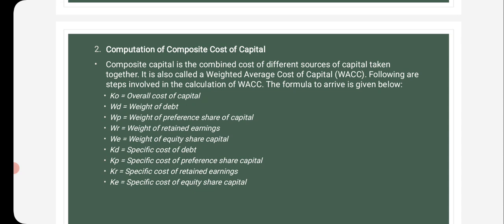Next, computation of composite cost — weighted average cost of capital. It refers to the weighted average cost of different sources of finance and is very important in financial decision making. The steps involved in computing the weighted average cost of capital are: calculate the cost of each source of finance, then assign weights to specific costs, then multiply the cost of each source by the appropriate weight and divide the total weighted cost by the total weight.